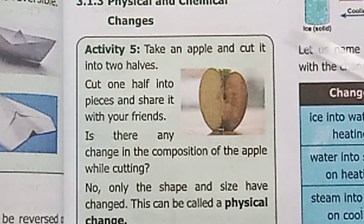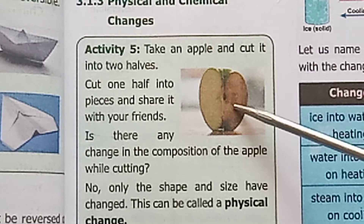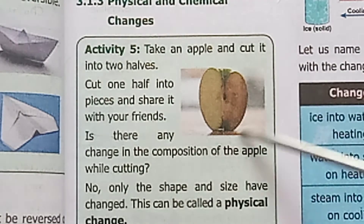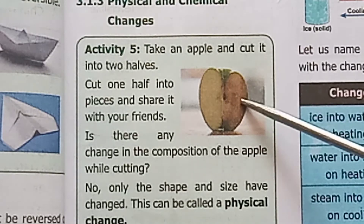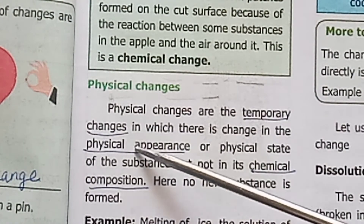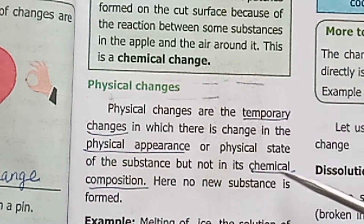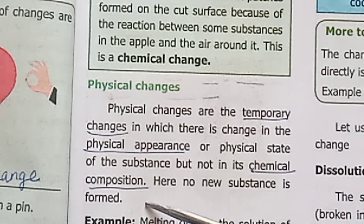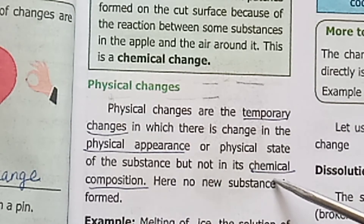What is shown in the picture? A piece of apple. If you cut it into two pieces, it will change the shape — this is a physical change. But if the apple is exposed to air, it will turn brown in color — so that is a chemical change. In a physical change, no new substance is formed.